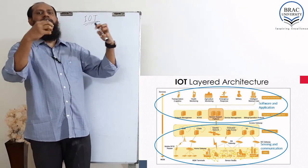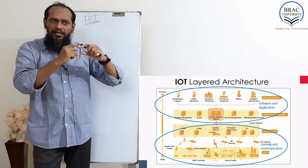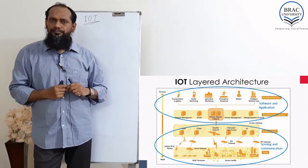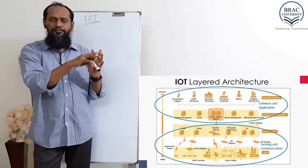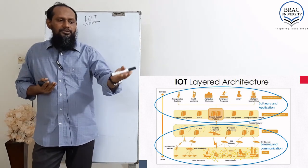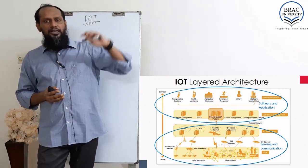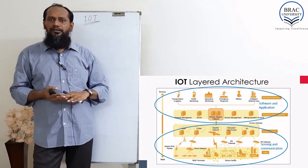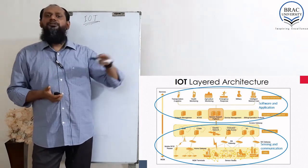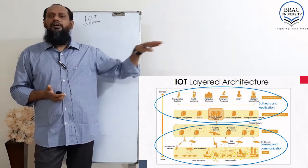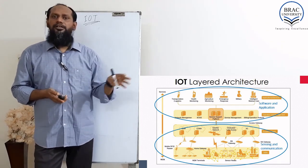In the server, all the data will gather in the different ways of the server — this is the cloud server. In the cloud, our data will come and after processing, whatever I want to see will be visible by using some software app or software application. So there are layers: one is the sensor network layer, another is the sync node, another is the communication pathway, another is the server, then the app for our service. That is the layer architecture of IoT.